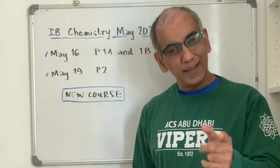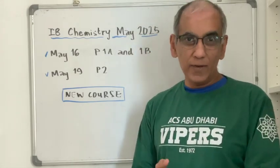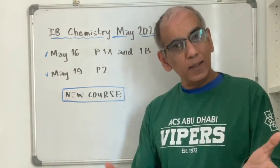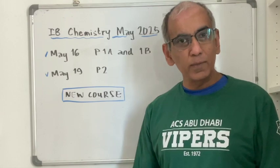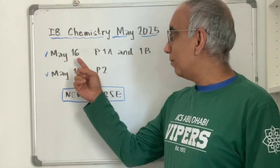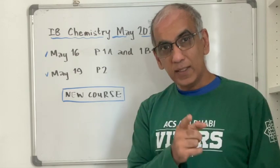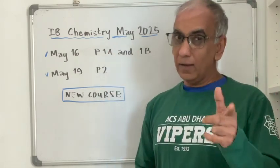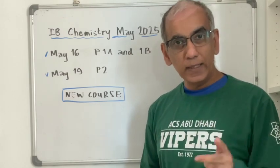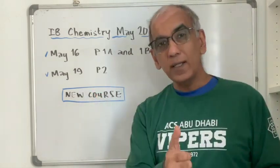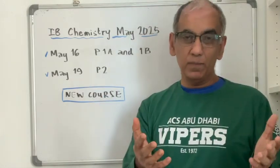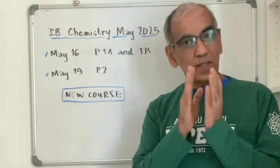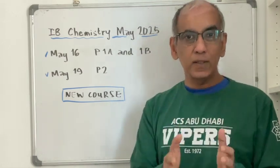Hello and welcome again to the IB Chemistry exam for May 2025. It's happening in about 50 days from today, on May 16th. You will be sitting for paper 1A and 1B on a Friday afternoon, and then you'll have the weekend to return on Monday the 19th of May for the all-important paper 2. This is a brand new course being assessed for the first time in 2025.